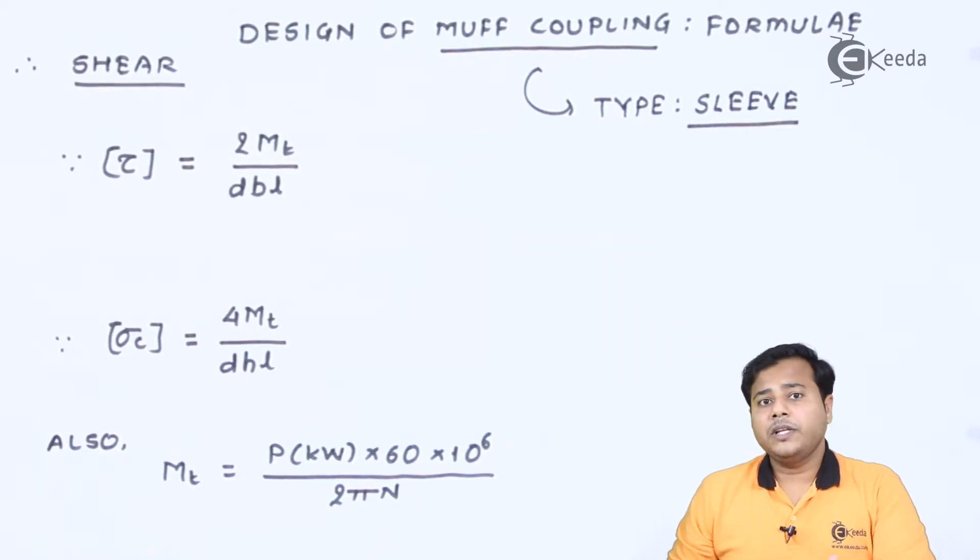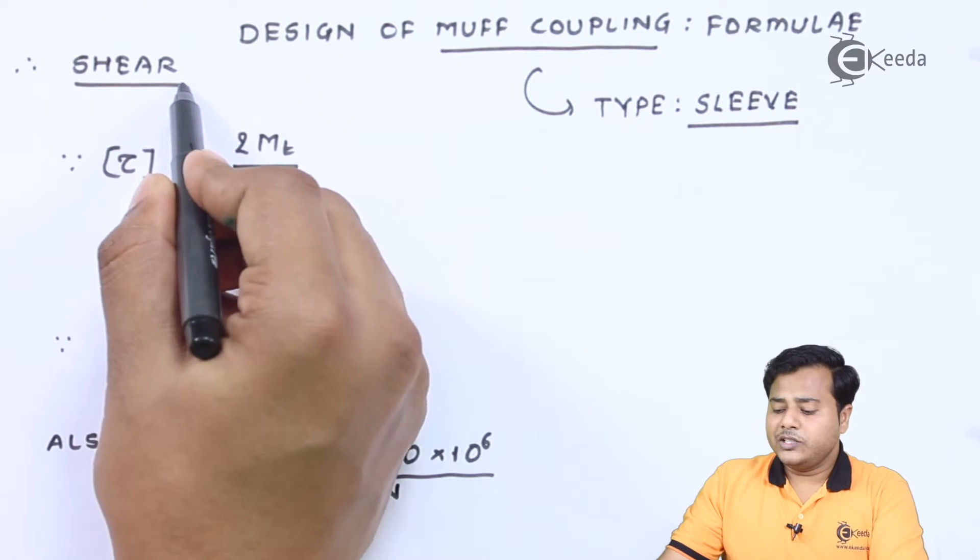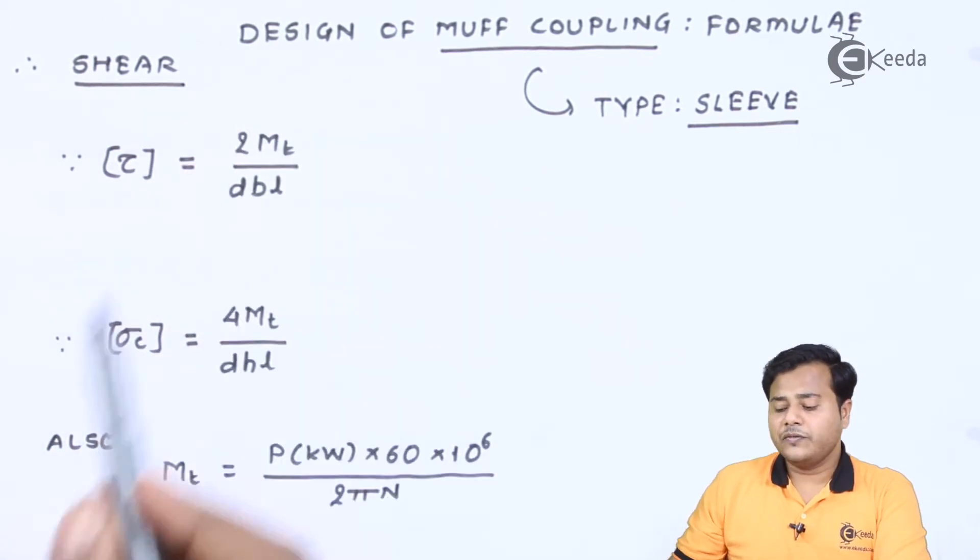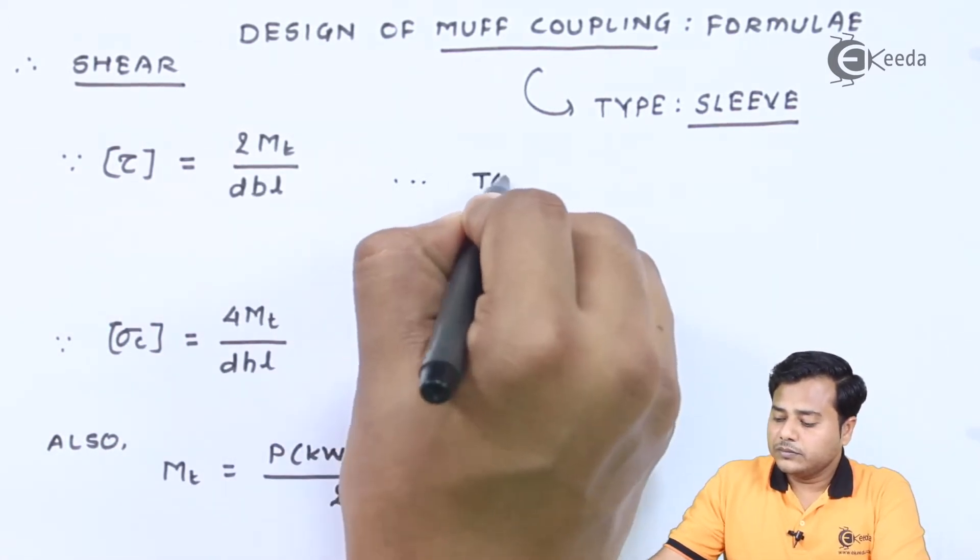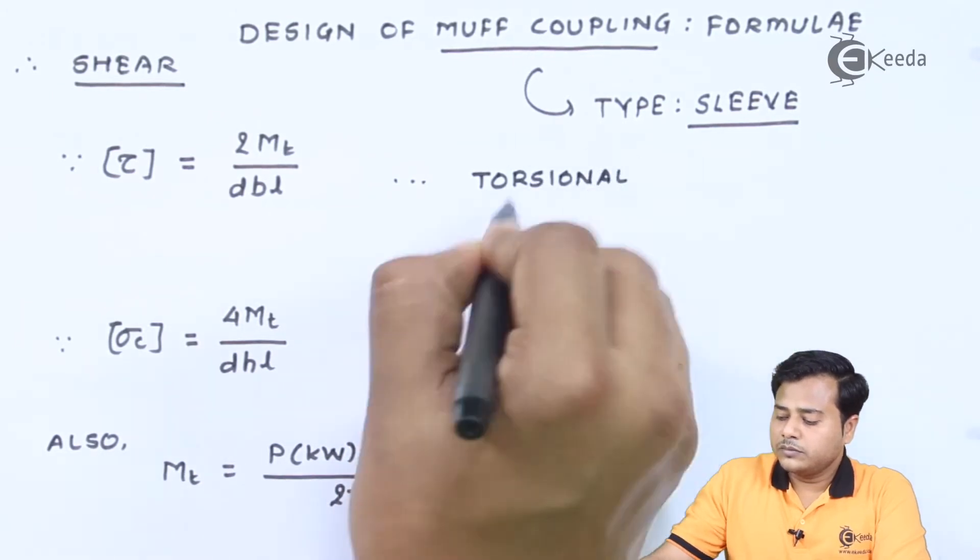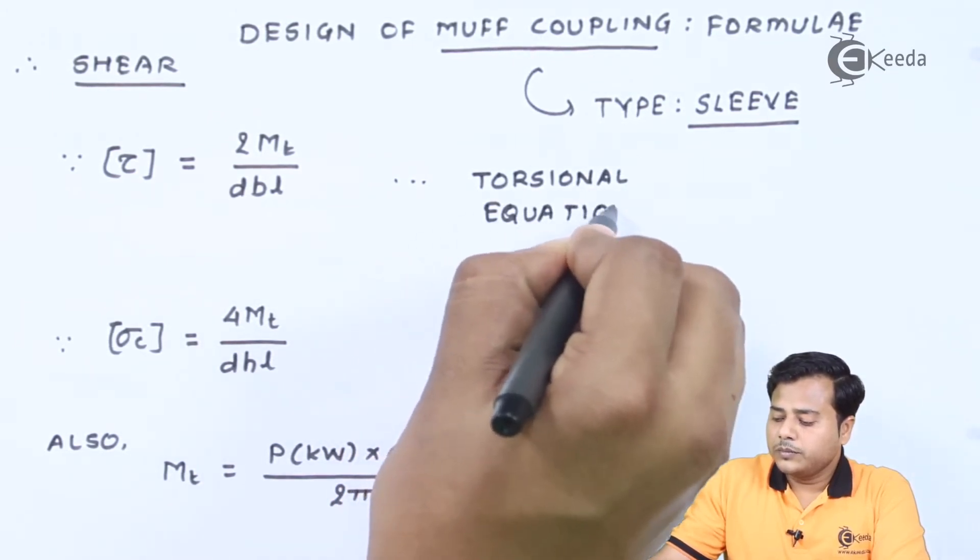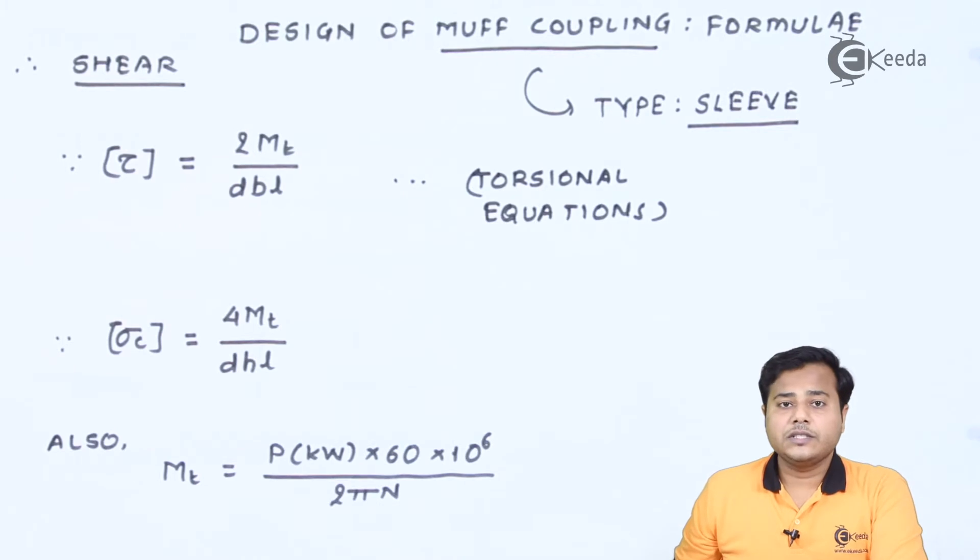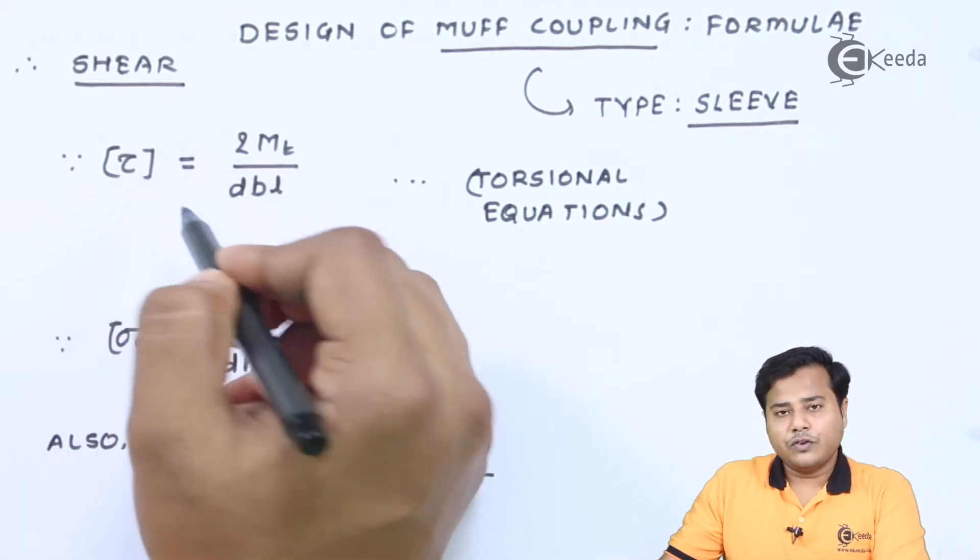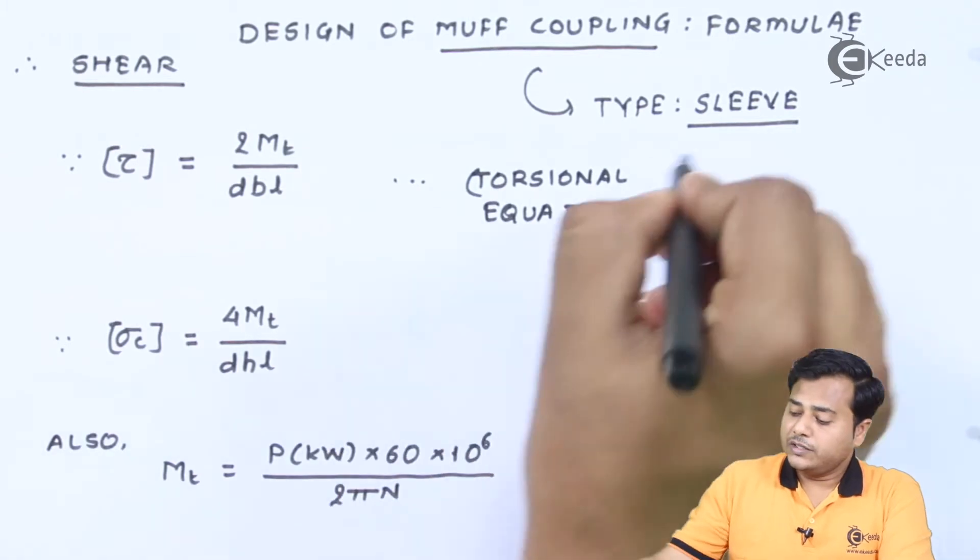Now we already have seen that the coupling may fail under two criteria. The first one is shear and second one is compression. So as far as the shear is concerned, the formula is very straightforward and that is based on the torsional equations. We already have learned those torsional equations in the subject of strength of materials where the equations, when switched back, become this particular formula. So let me remind you what the equations are.